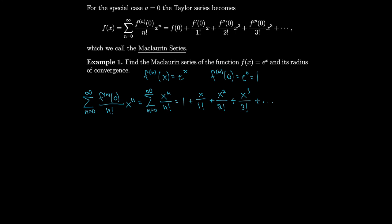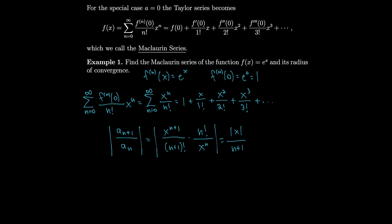Let's do the ratio test to find the radius of convergence. The ratio |a_{n+1}/a_n| equals |x^{n+1}/(n+1)!| divided by |x^n/n!|, which simplifies to |x|/(n+1). As n goes to infinity, this goes to 0 regardless of x, since any finite value divided by an arbitrarily large number goes to 0. Since 0 < 1, the series converges for all x, so the radius of convergence is infinity.